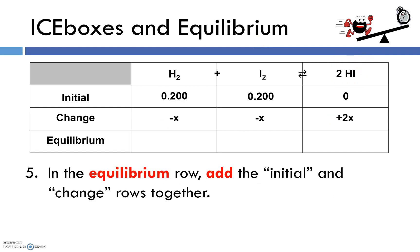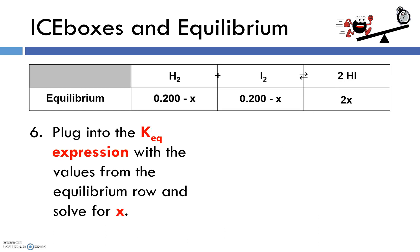In the equilibrium row, we just add the initial and change rows together. So I'd have 0.200 minus x, and 2x. And now the icebox has kind of served its purpose. We know what the concentrations are going to be at equilibrium.